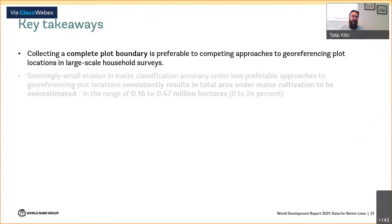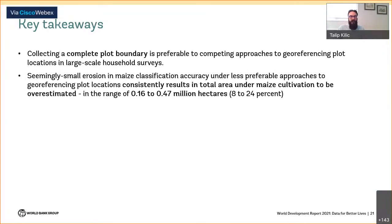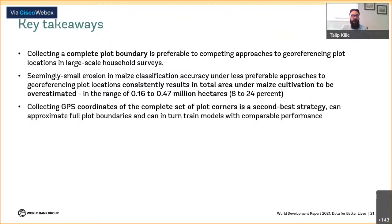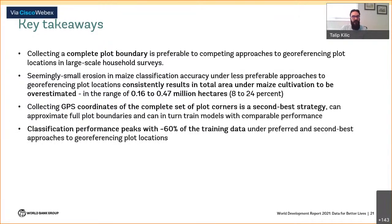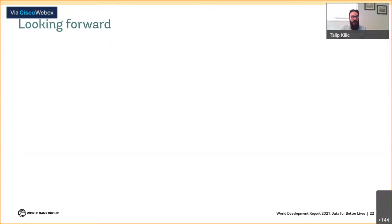Key takeaways: we recommend surveys collect complete plot boundaries, as small erosion in maize classification accuracy results in large overestimates of maize area anywhere from 8 to 24 percent. We provide recommendations around second and third best strategies for large-scale surveys. An important finding is how much training data is needed — with about 60 percent, we can do the job just fine.